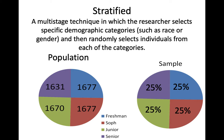Stratified random sampling is a multi-stage technique in which a researcher selects specific demographic categories like race or gender and then randomly selects individuals from each of these categories. This is random sampling done within strata, with the restriction that important subgroups have to be proportionally represented in the sample. You divide your population into strata or subgroups and then use a random sampling procedure within each stratum. This gives a researcher control to ensure that each subgroup is represented.